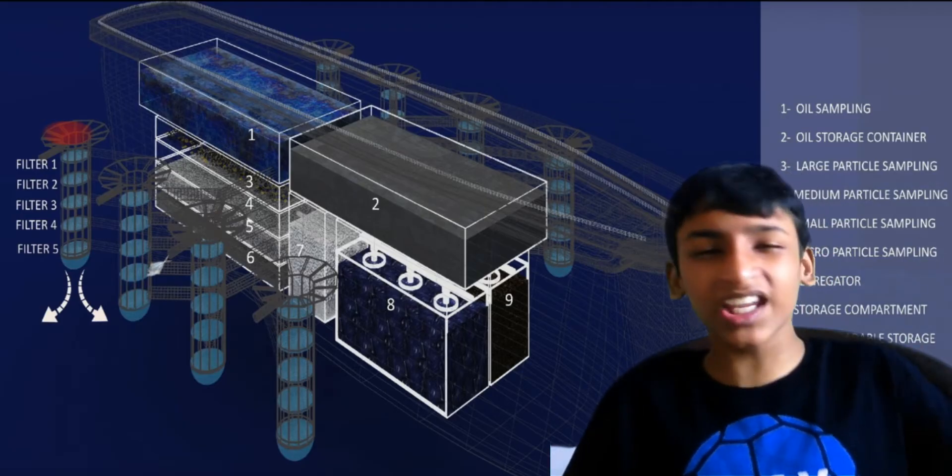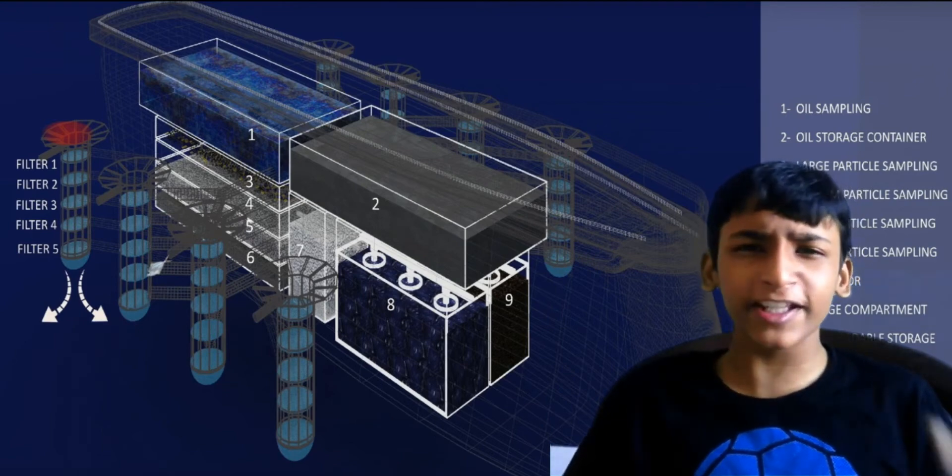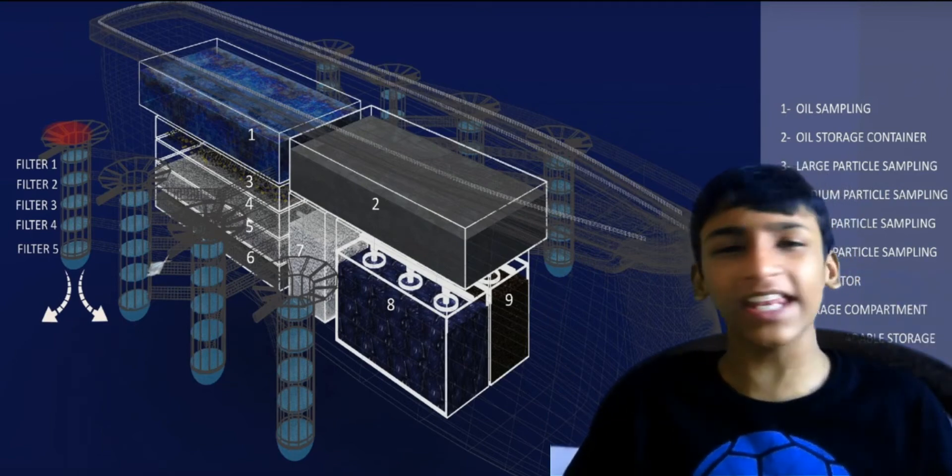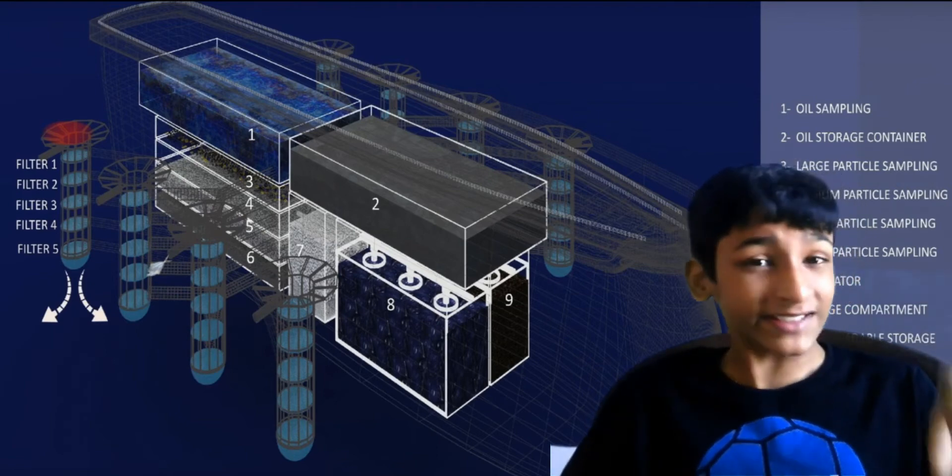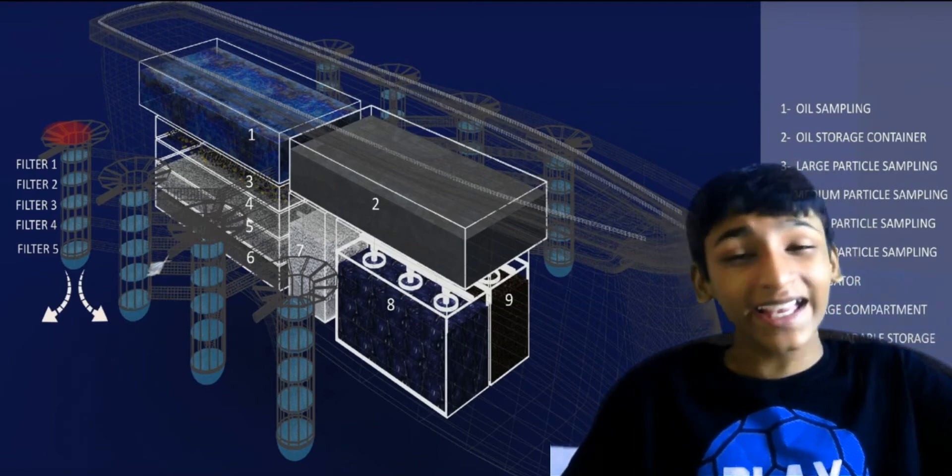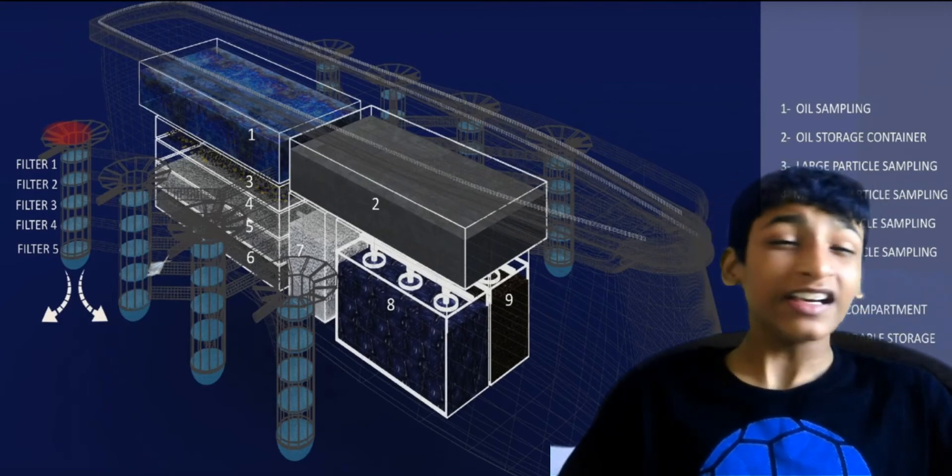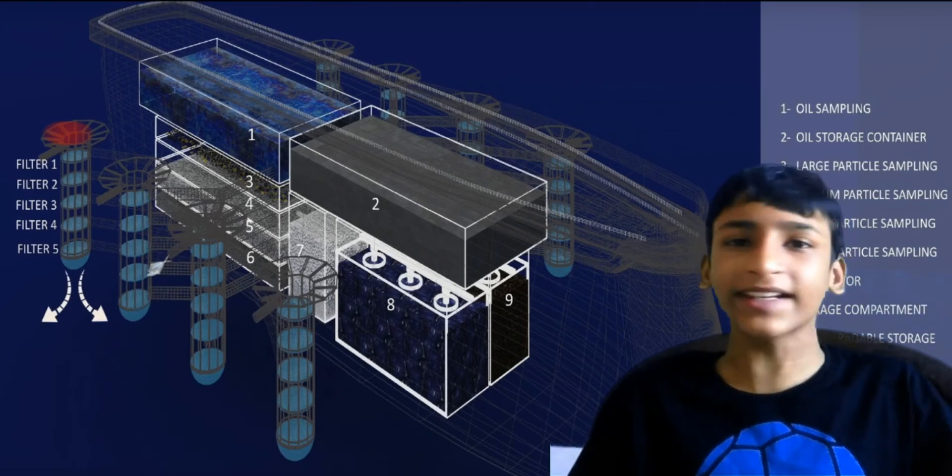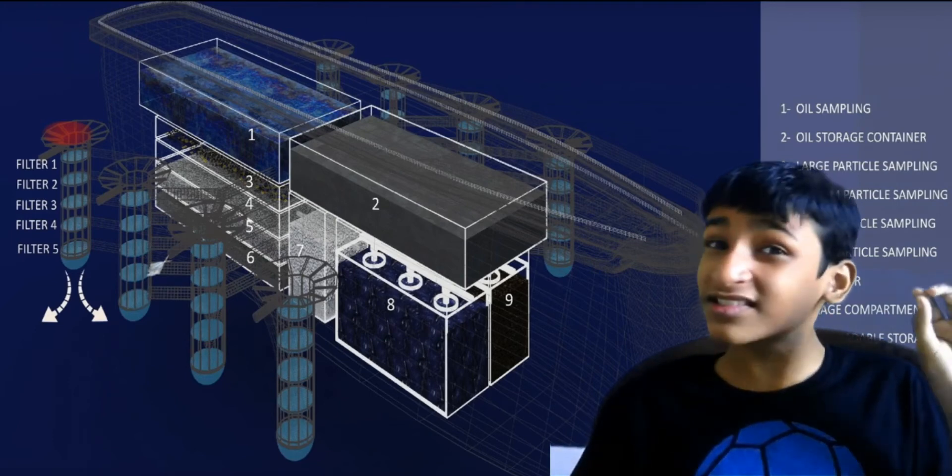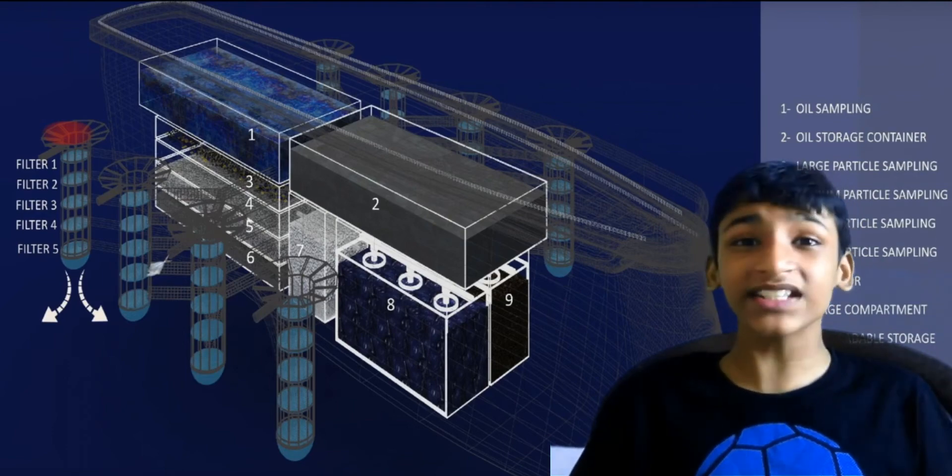Think of Airways as a giant vacuum cleaner with various tubes attached to different collection bags. When waste enters Airways, it analyzes, segregates, and compacts it. The filtered water is released back into the ocean, and no marine life is harmed during this process.